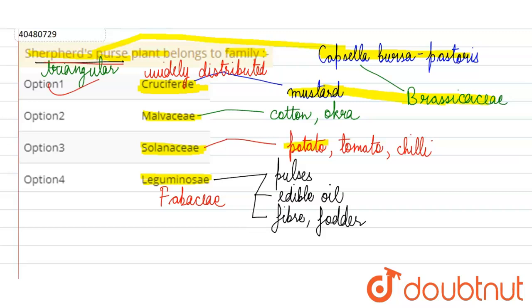Shepherd's Purse, which is a plant from the family - Capsella bursa-pastoris is its botanical name. It comes from our mustard family. We call it Brassicaceae. Cruciferae is our mustard family. This is our option A. This is our correct answer.